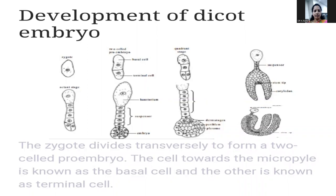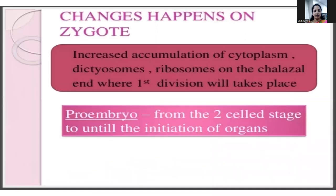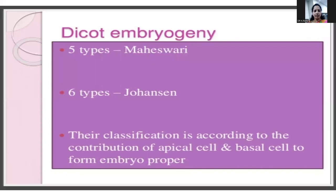With continuous growth, the embryo becomes heart-shaped, made up of two primordia of the cotyledons. Each cotyledon appears on either side of the hypocotyl in most dicotyledons. This is the general course of embryogenesis as seen in Capsella bursa-pastoris — the development of the dicot embryo. According to Maheshwari and Johnson, six types are classified according to the contribution of the apical cell and basal cell.